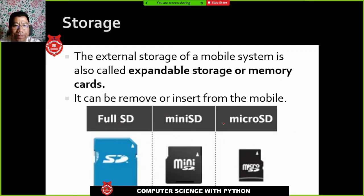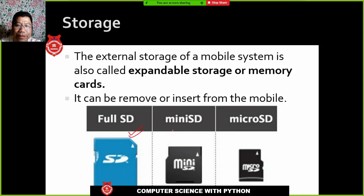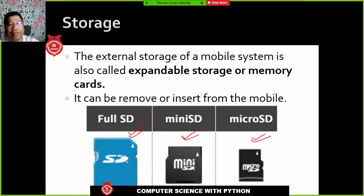Mobile phones support expandable storage via memory cards. The larger memory cards used in digital cameras are full SD cards. Some older mobile phones used mini SD cards, which were large in size. Nowadays, all mobile phones use micro SD cards.